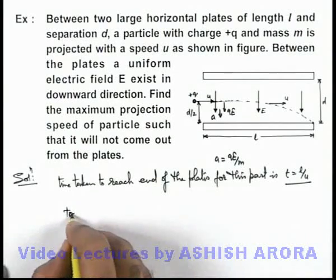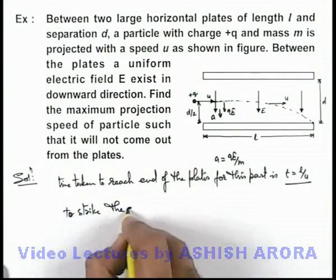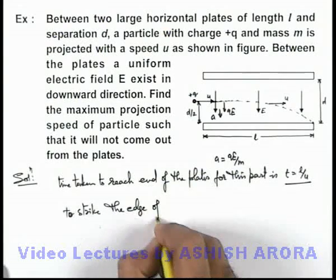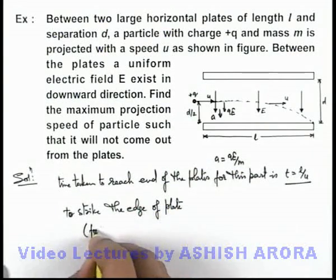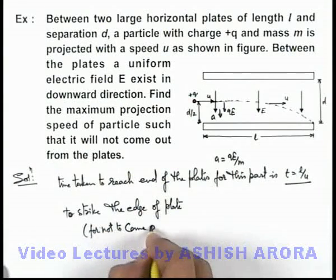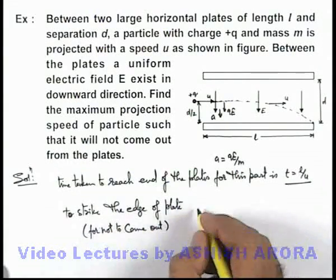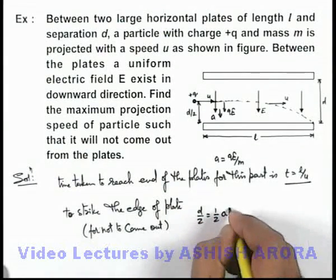To strike the edge of the plate, or for it not to come out, we can write d/2 should be equal to (1/2)ay·t².